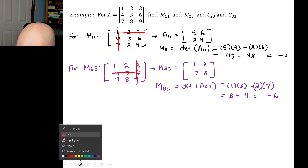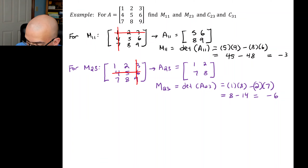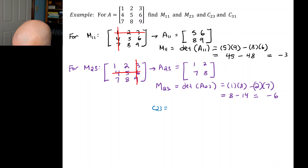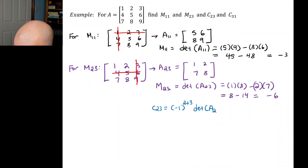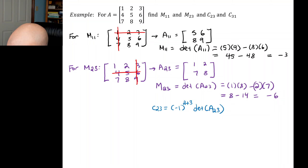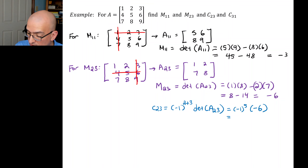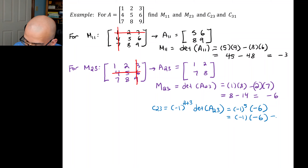Now for C23: C23 equals negative 1 to the power of 2 plus 3 times the determinant of A23. We already found that was negative 6. So we have negative 1 to the power of 5 times negative 6. Negative 1 to an odd power is negative 1, so negative 1 times negative 6 gives positive 6.